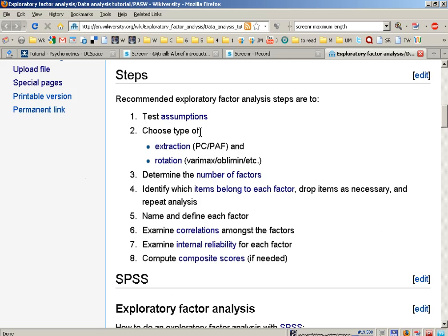Secondly, we need to choose what type of factor analysis we're going to run. We can run either a principal components or a principal axis factoring. Principal components is done when we want to analyze all the variance of the variables, and that's usually for the purpose of later on constructing factor scores for use in other analyses.